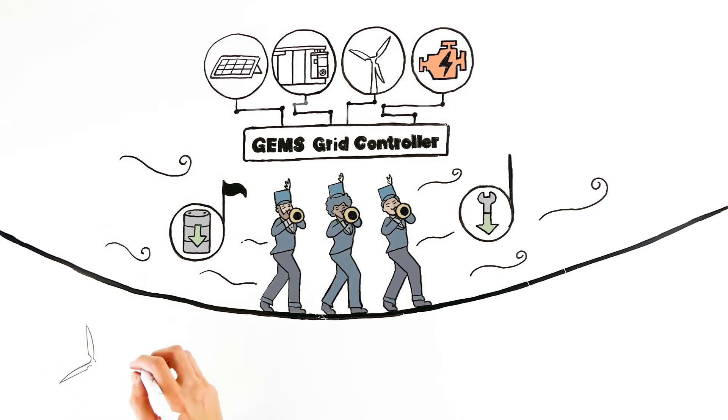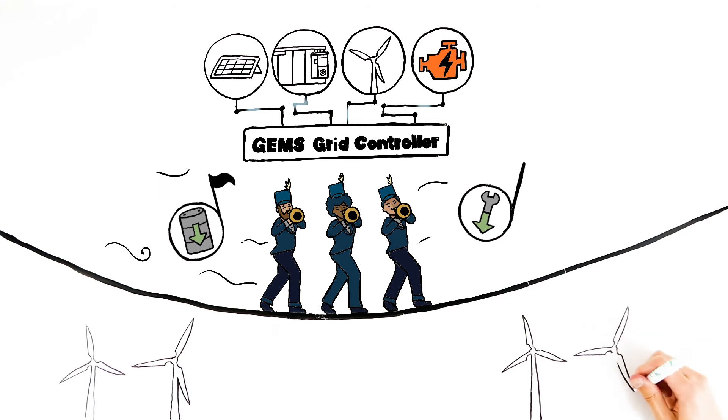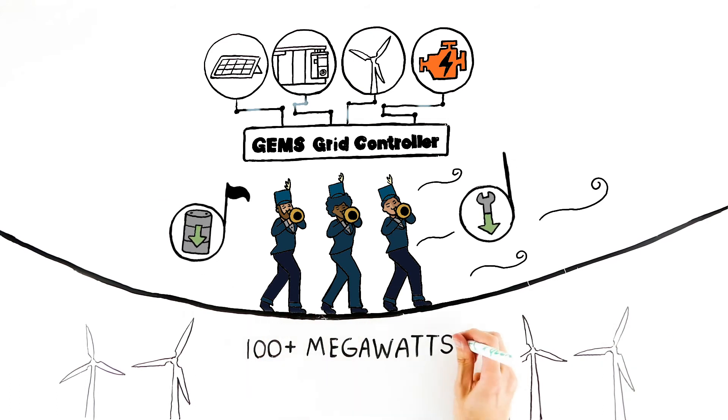And Wartzilla can do the same for bigger operations too. A single grid controller can support thousands of devices and 100 megawatts of power.